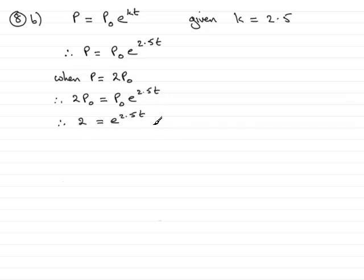Now in order to solve this, what I need to do is take natural logs of both sides. So if I take the natural log here of 2, it's going to be equal to the natural log of e^(2.5t).